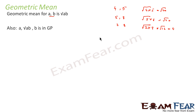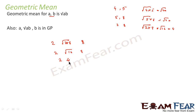Also, if you notice, if we have terms a, root(ab), and b, then these terms are in GP. For example, we have 2 and 8, and root of 2 into 8 is root of 16, which is 4. So we can write 2, 4, 8. We notice that these are in GP because 4 by 2 is 2, and 8 by 4 is also 2.